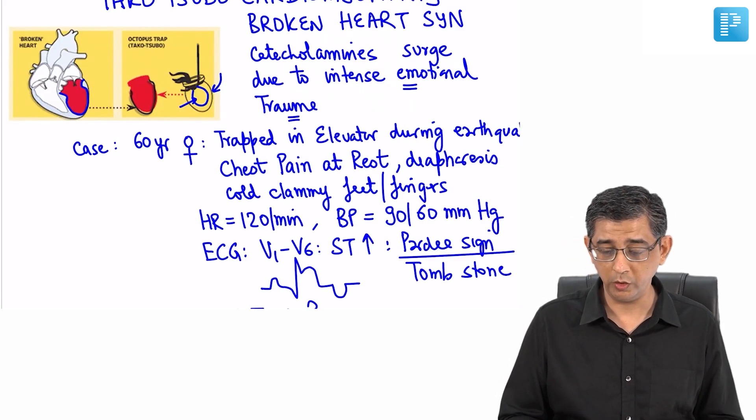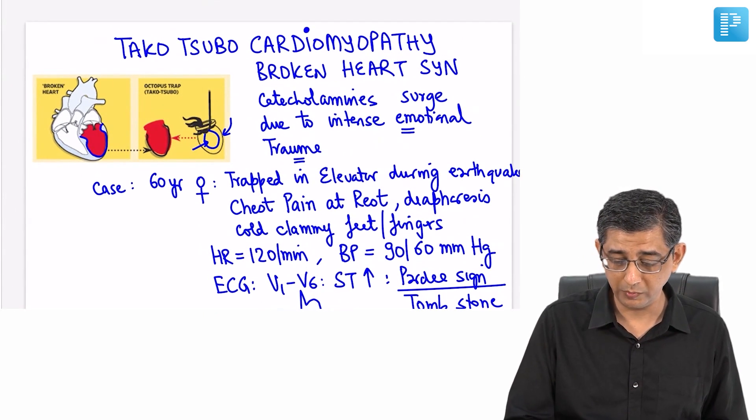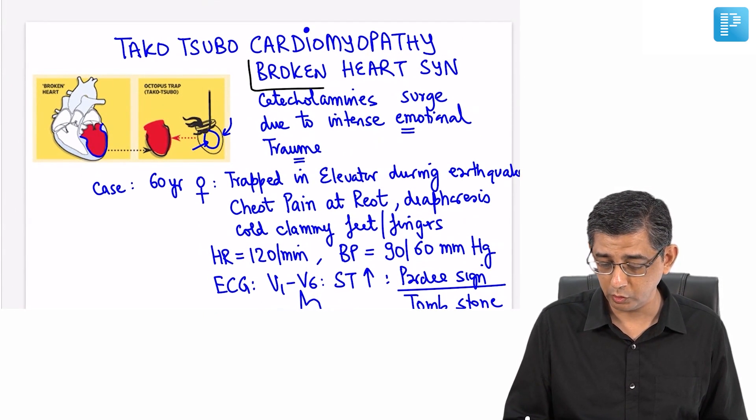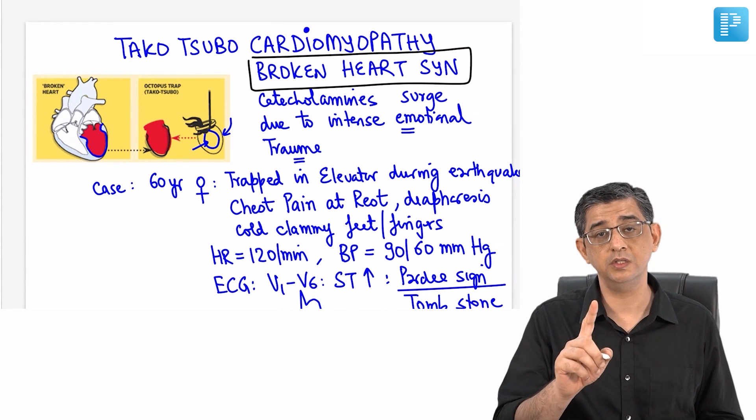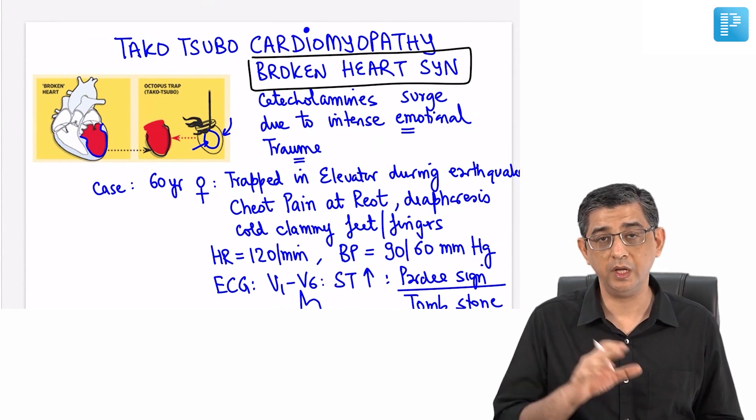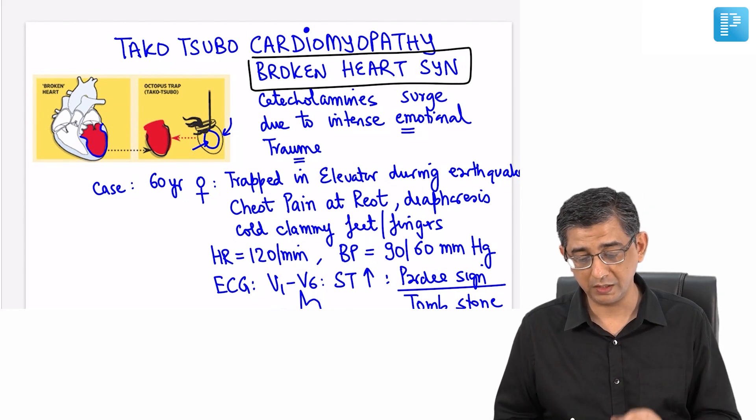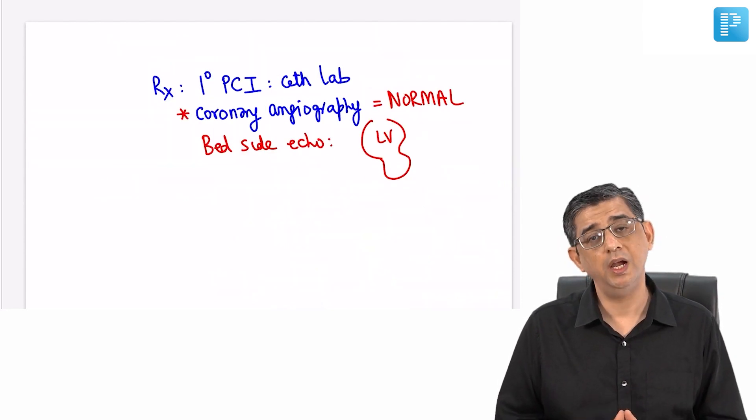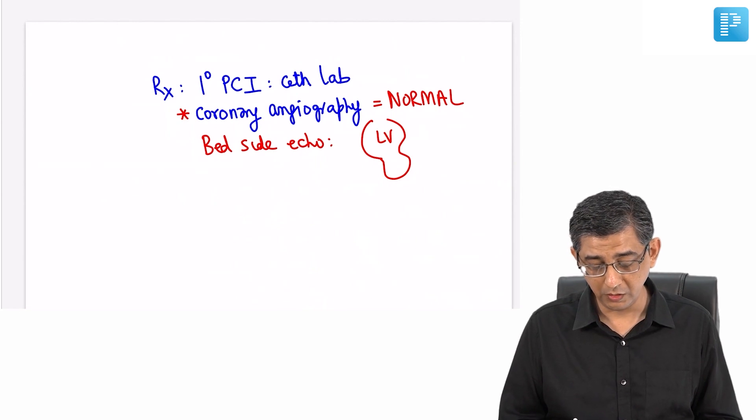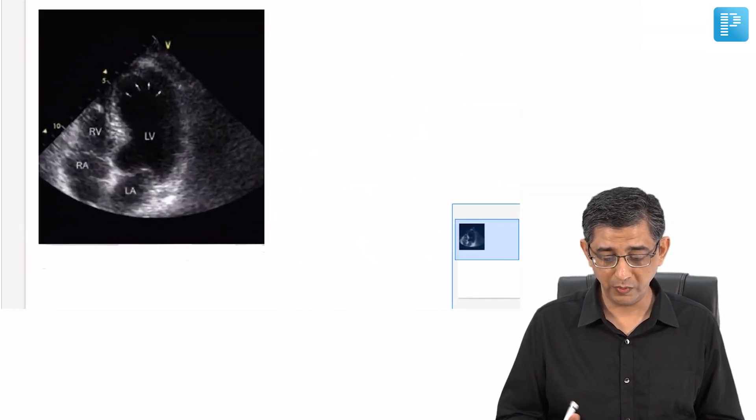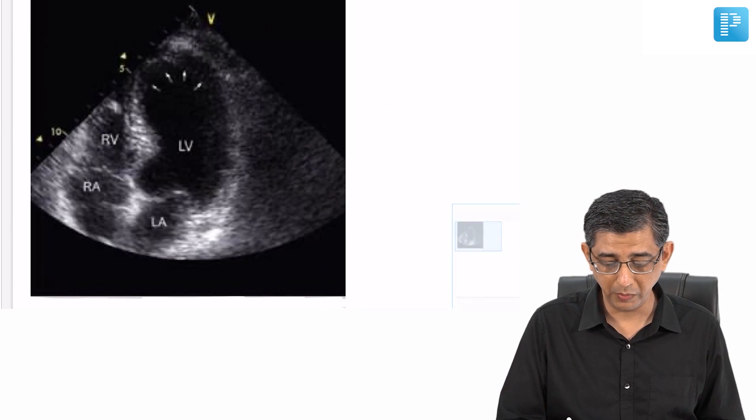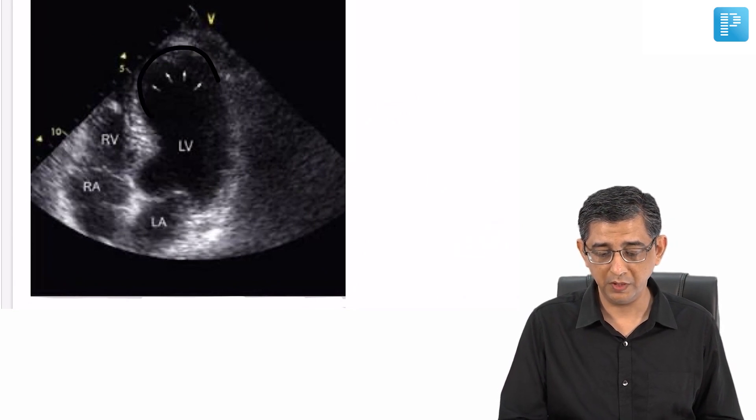Message number one is Takotsubo cardiomyopathy slash broken heart syndrome is a differential diagnosis of ST elevation MI. The diagnosis of this condition, though it is rare, is made in the cath lab. If we do not have a facility of a cath lab, the case is likely to be missed. Whenever you're gonna evaluate the echocardiography of this patient, that's where the gross abnormality or the bulge of the left ventricle would definitely be highlighted.